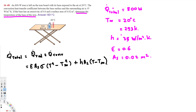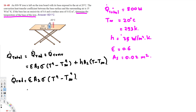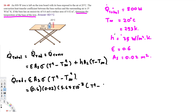Let's find Q_dot_radiation first. Q_dot_radiation equals emissivity times surface area times the Stefan-Boltzmann constant times (T_surface to the power 4 minus T_surrounding to the power 4). Emissivity is 0.6, surface area is 0.02, Stefan-Boltzmann constant is 5.67 times 10 to the power of minus 8. T_surface is what we are trying to find, and T_surrounding is 293 Kelvin to the power of 4.